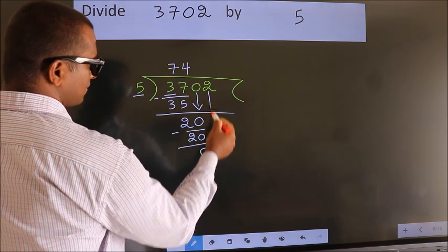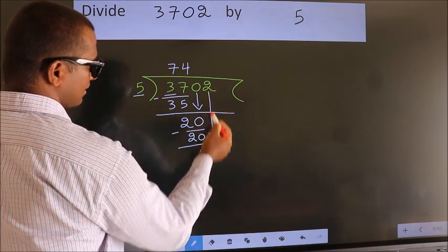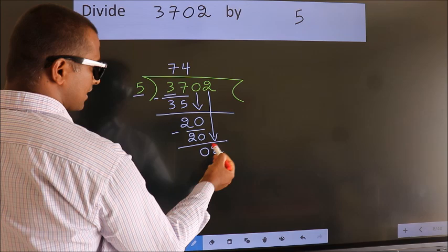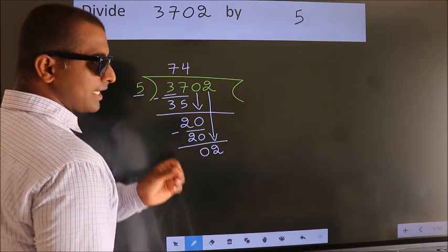After this, bring down the beside number. So, 2 down. After this step, the mistake happens.